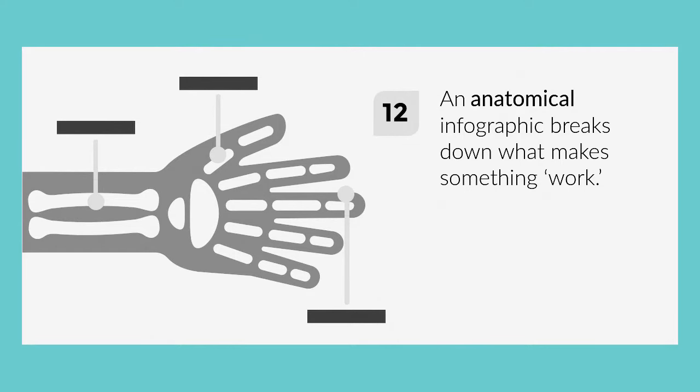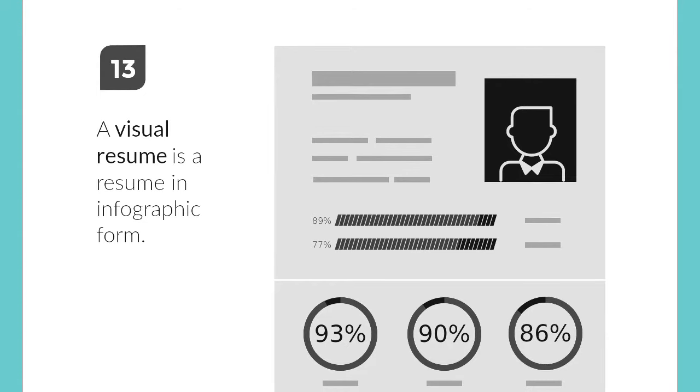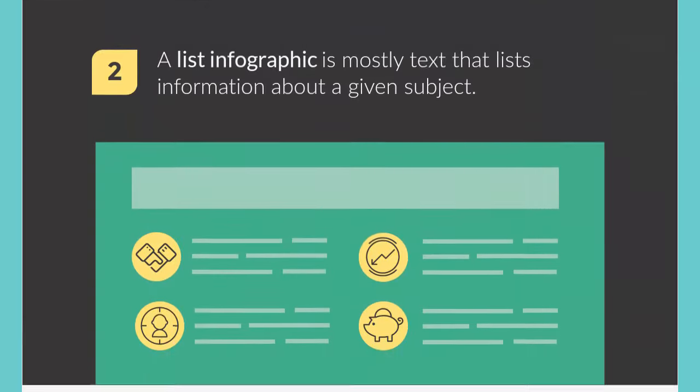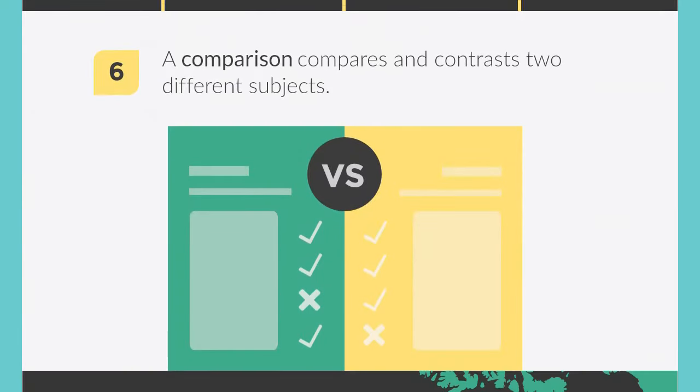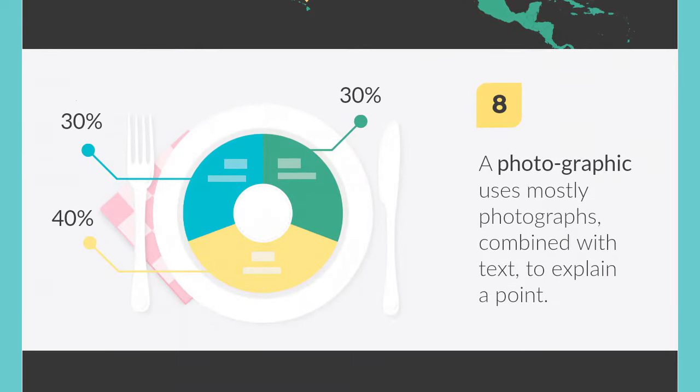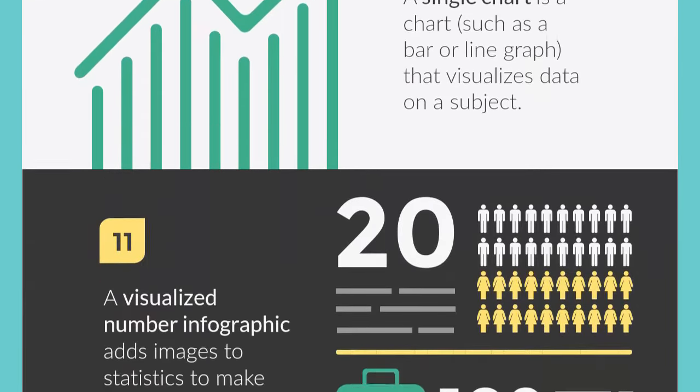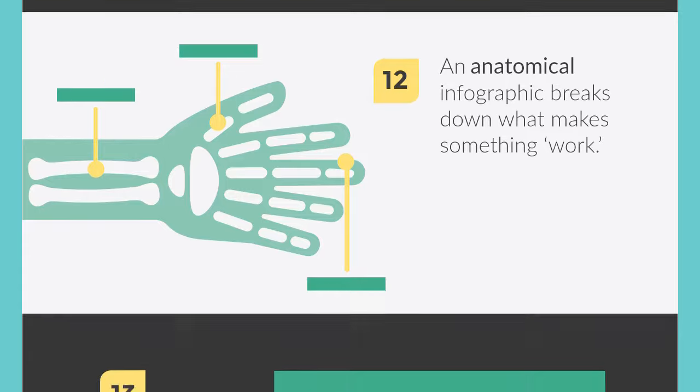The twelfth type is anatomical — it breaks down what makes something work, labeling the parts of a body, a machine, a computer, or any part of your subject. And lastly, we have the visual resume, which is a resume in infographic form — you make a resume with graphs, charts, images, or icons. So those are the 13 types of infographics: mixed charts, information list, timeline, how-to guide, process or flowchart, comparison, location, photographic, hierarchical, single chart, visualized numbers, anatomical, and visual resume.